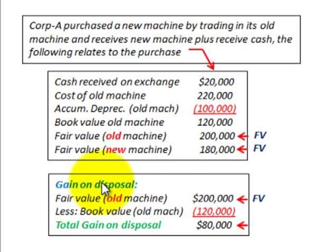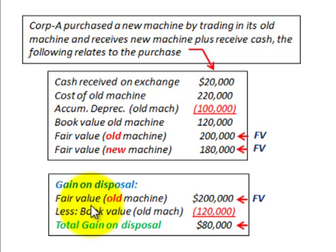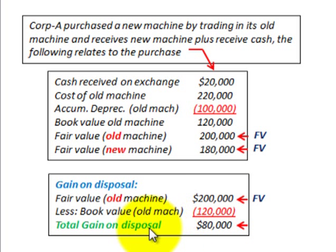The fair value of the new machine was given at $180,000. The first thing we have to do is calculate the gain on this disposal — on this exchange. We take the fair value of the old machine, $200,000, less the book value of the old machine, $120,000. The difference gives us a total gain on the disposal of $80,000.